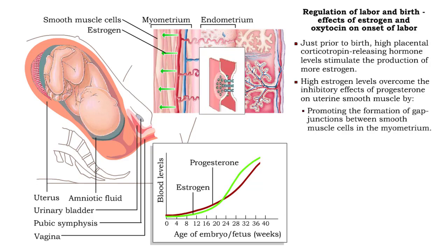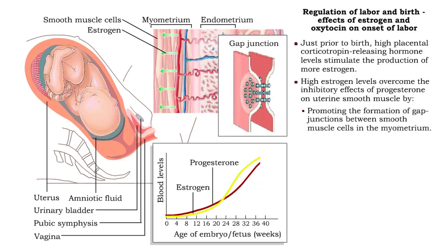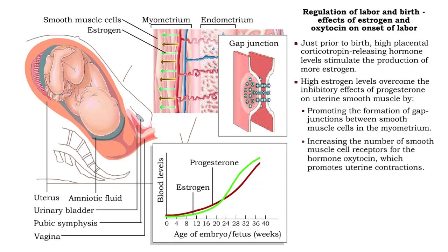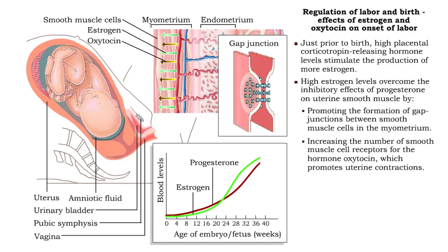High levels of estrogen cause gap junctions to form in the smooth muscle cells of the myometrium, allowing the muscle cells to work in a coordinated fashion during labor. High levels of estrogen also cause an increase of oxytocin receptors within the uterine muscle fibers. Since oxytocin stimulates myometrial contractions, the increase in oxytocin receptors triggers the uterine muscle fibers to contract.